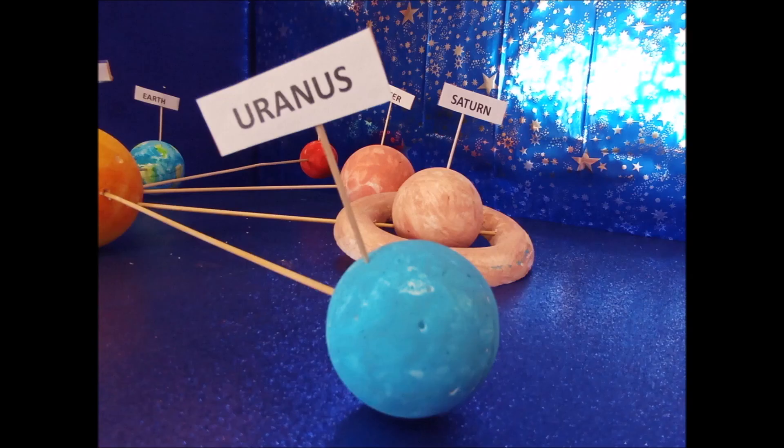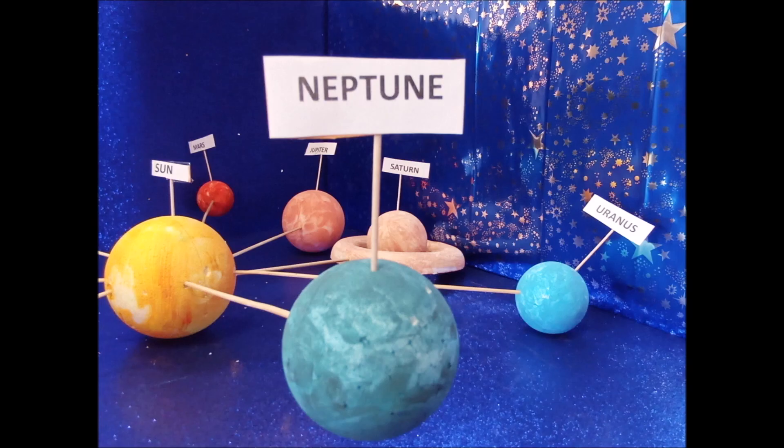Uranus is a big blue-green planet. It's extremely cold. Neptune is a very windy planet.